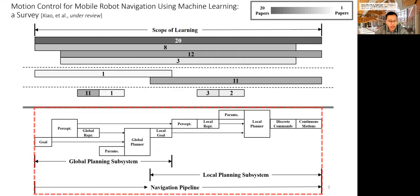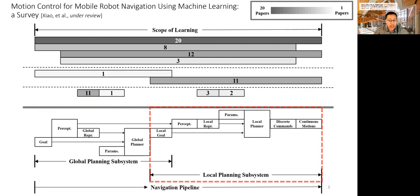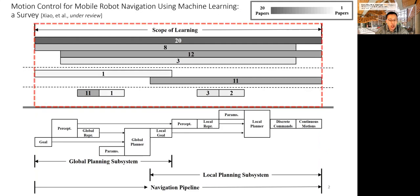At the bottom, you can see a breakdown of classical navigation systems, horizontally from left to right. It starts with a global planning subsystem, which takes in a global goal and perception and produces a local goal. There is also the local planner, which takes local goal from the global planner and produces raw motor commands to move the robot. At the top, we show the scope of learning of each paper within the classical pipeline. The width of each block represents what classical components each of these learning approaches encompasses. The shade of each block represents the number of papers. Darker blocks mean more papers are targeted at the classical components covered by this block.